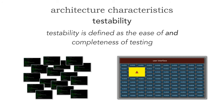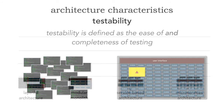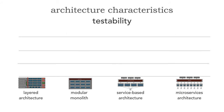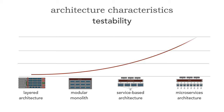So let's take a look at how testability is related to architecture, or more specifically, how architecture influences testability. Don't forget the definitions: the ease of and completeness of testing. Levels of testability start significantly increasing as we move towards distributed architectures, including microservices.